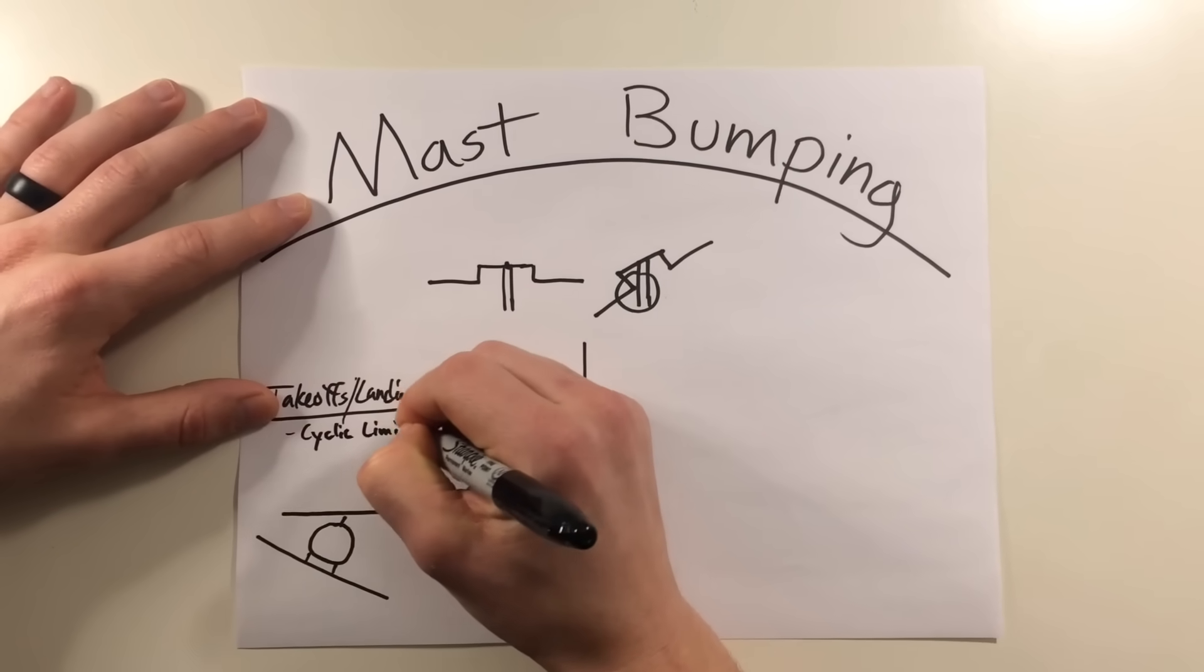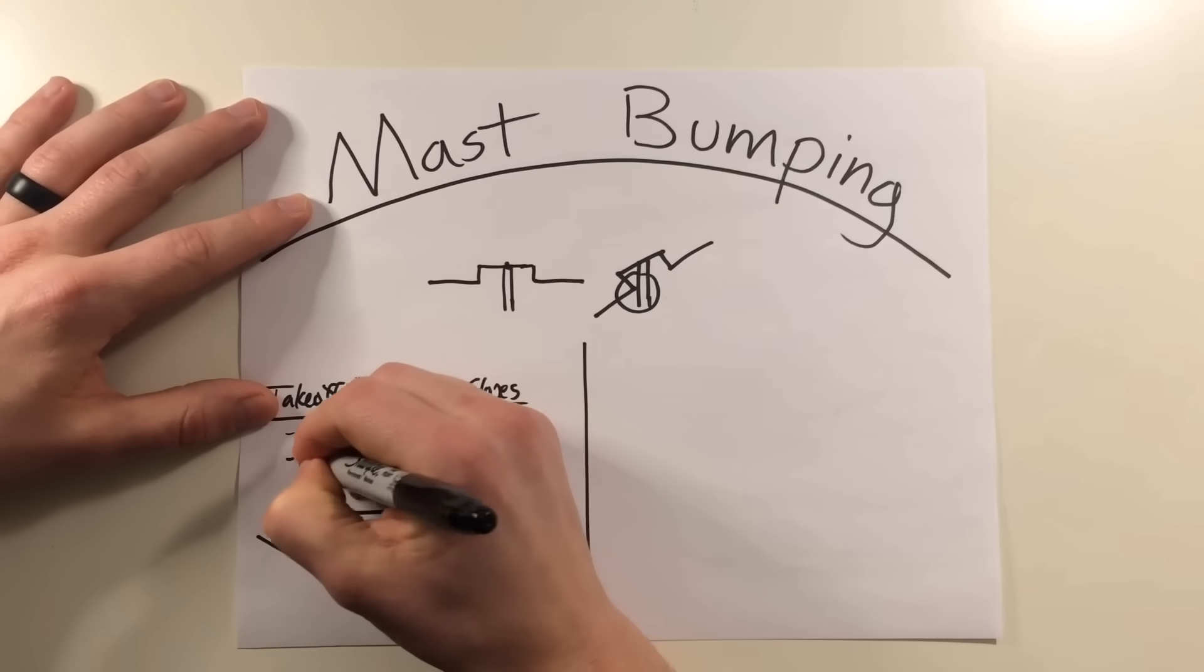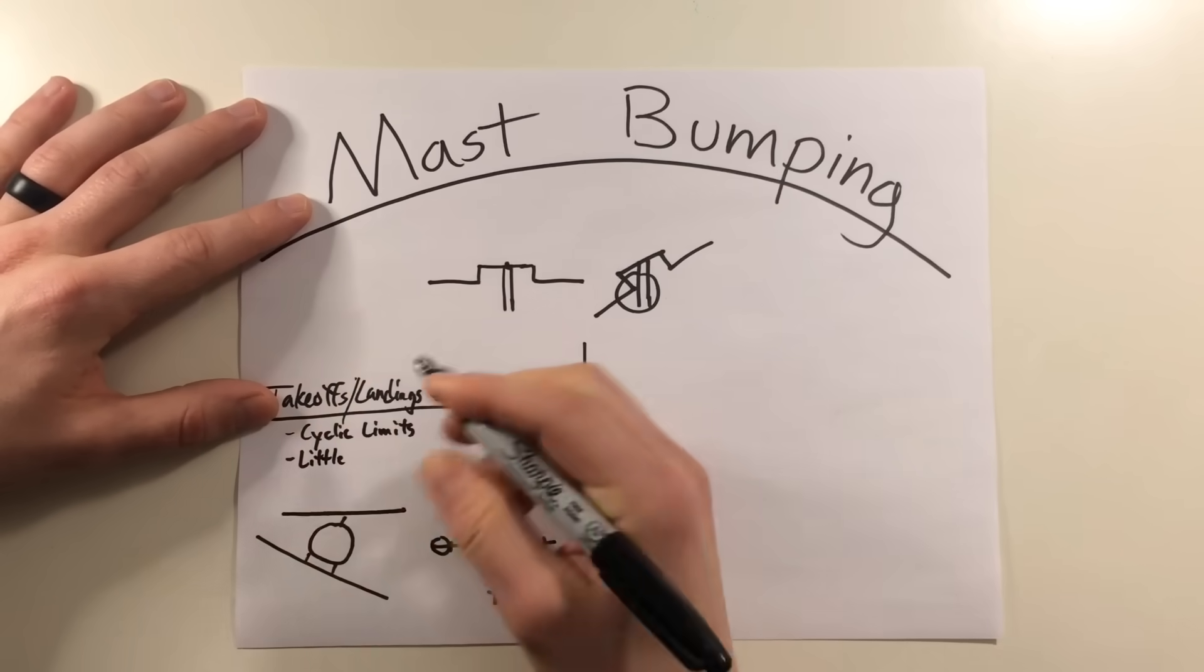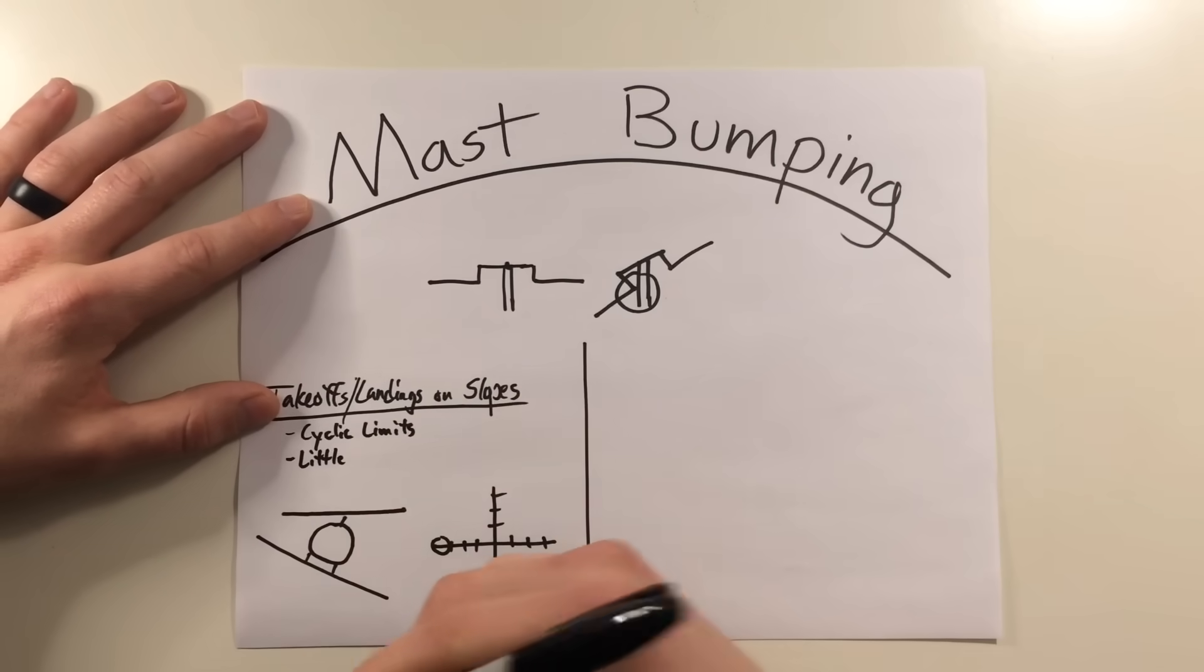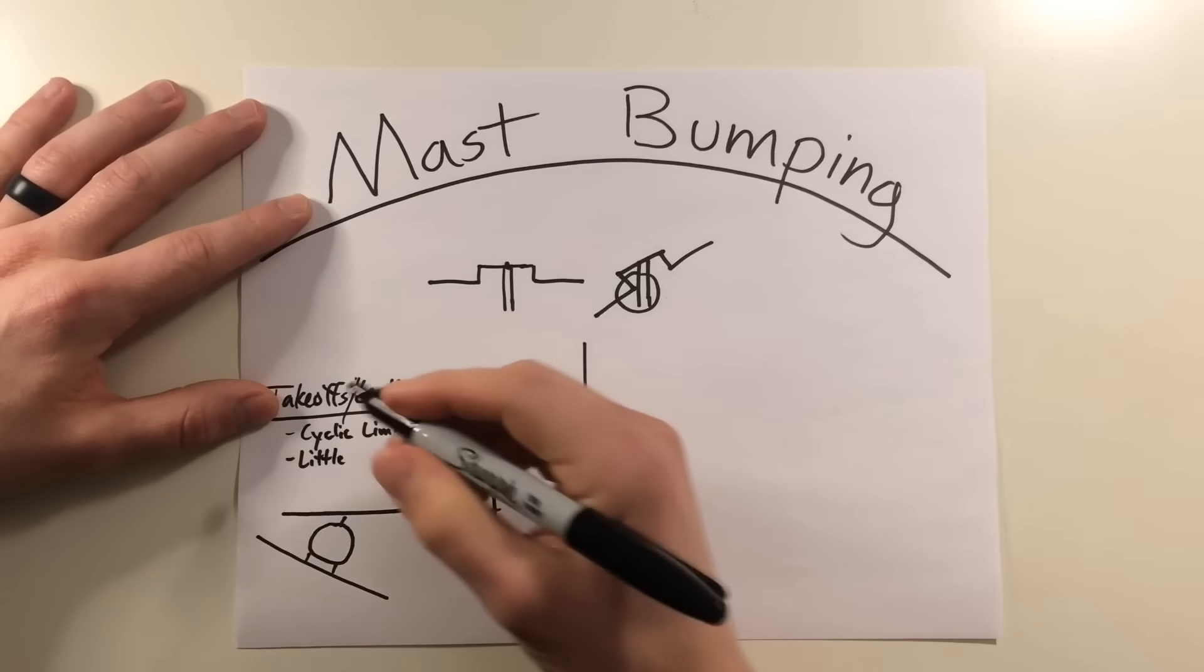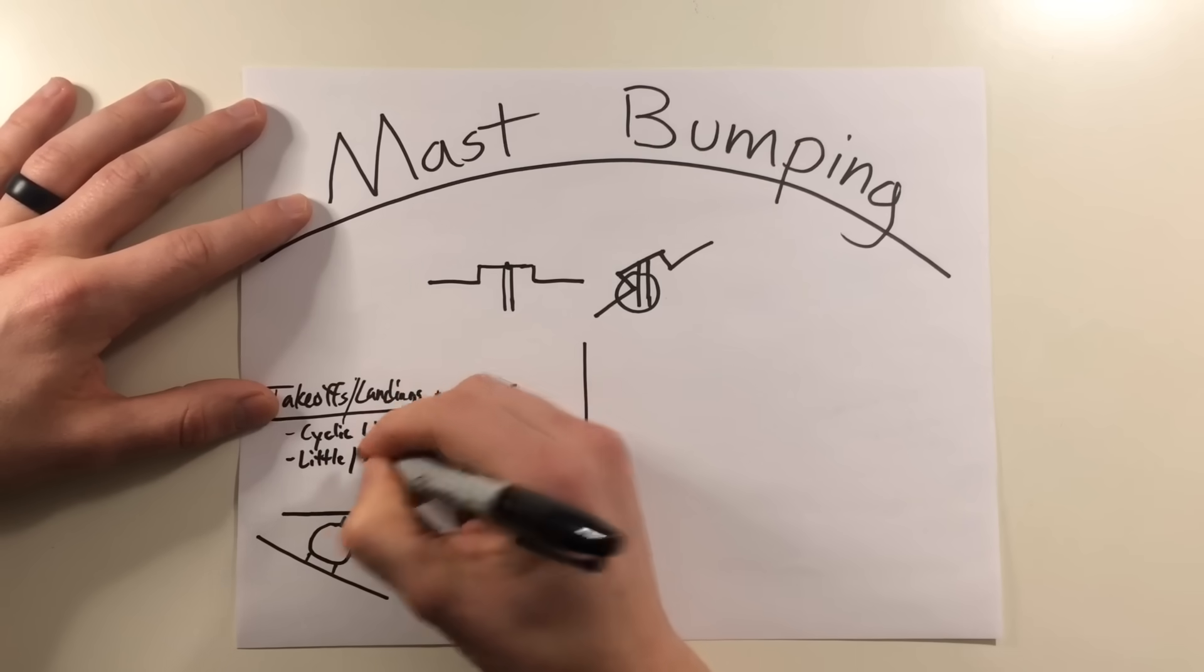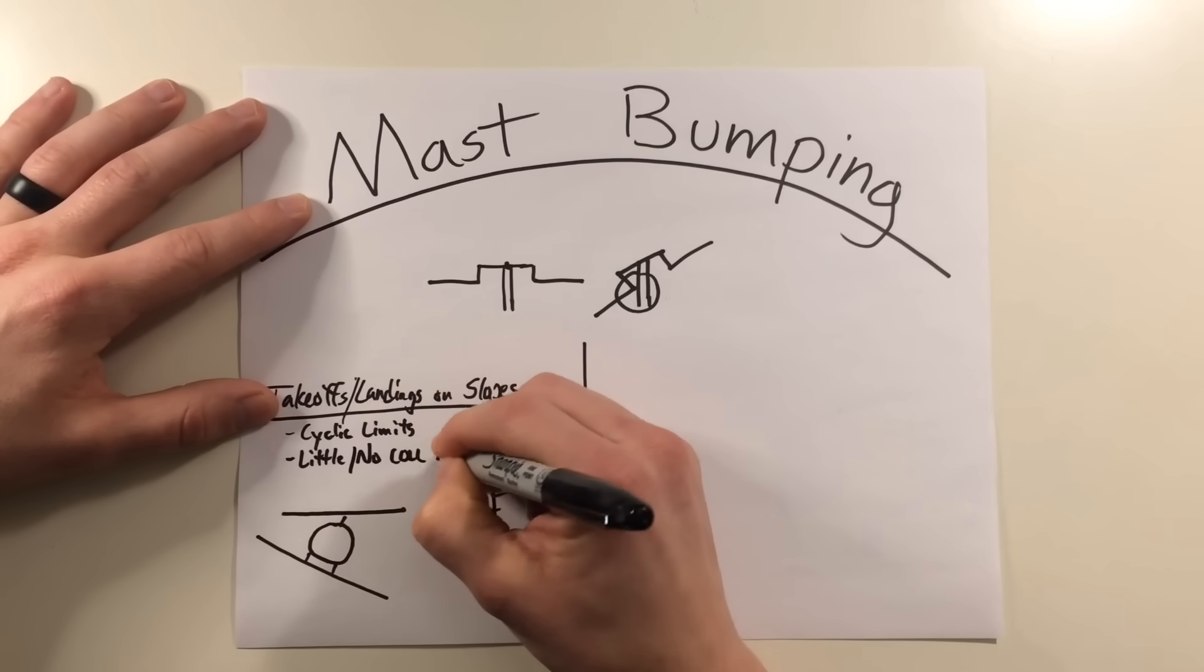You're getting to your cyclic limits. It's really not going to be too severe because you can make corrective action for it by either choosing a different place to land if you land to a slope or applying a little bit more power prior to displacing your cyclic. But like I said, you're getting to your cyclic limits with little or no collective applied.